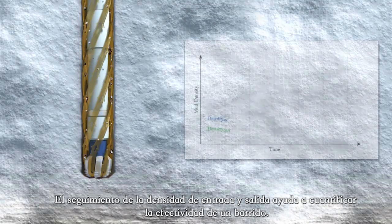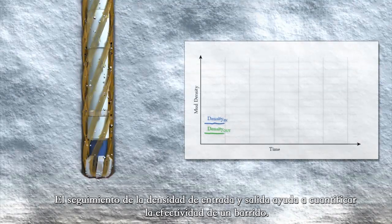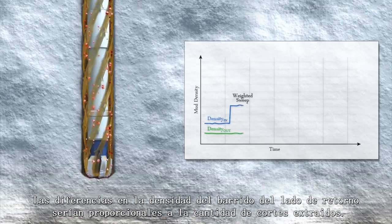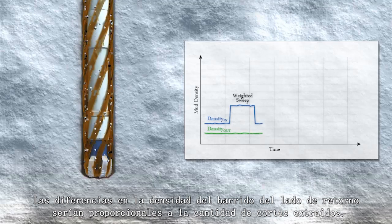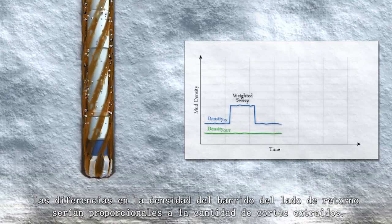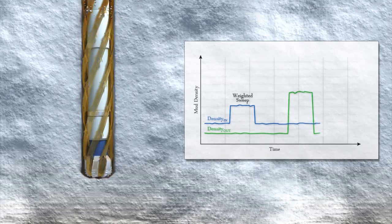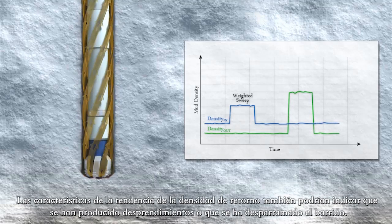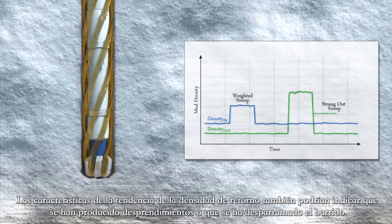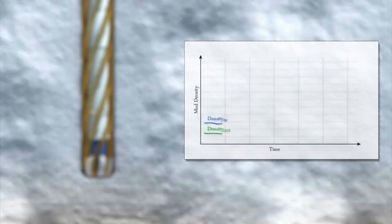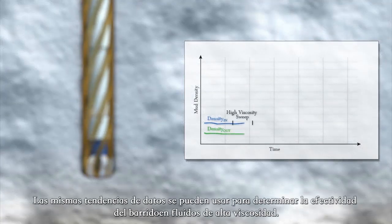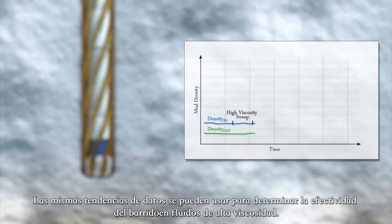Tracking the density in and out helps quantify the effectiveness of a sweep. The density differences on the return side would be proportional to the amount of cuttings removed. Trend characteristics of the return density could also be an indicator of sloughing or that the sweep has been strung out. The same data trends can be used to determine sweep effectiveness on high viscosity fluid sweeps.